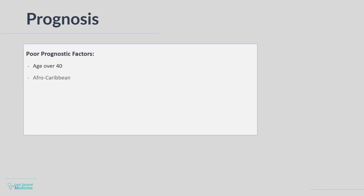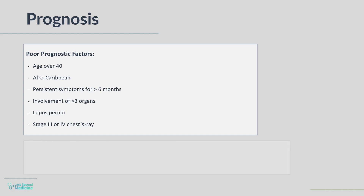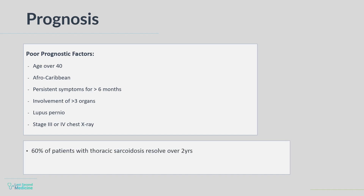Poor prognostic factors include age over 40, Afro-Caribbean ethnicity, persistent symptoms for more than 6 months, involvement of more than 3 organs, lupus pernio, and a stage 3 or 4 chest X-ray. Sixty percent of patients with thoracic sarcoidosis resolve over 2 years. The overall mortality is low and usually occurs due to cardiac involvement or pulmonary fibrosis.